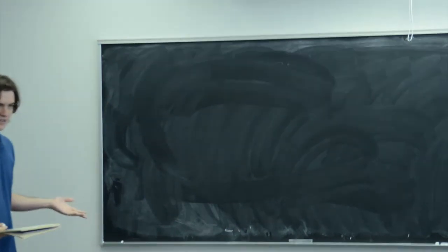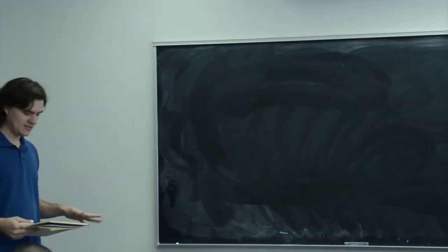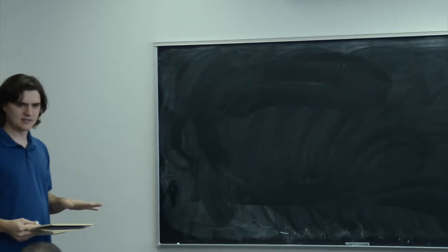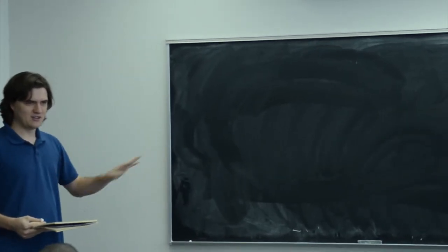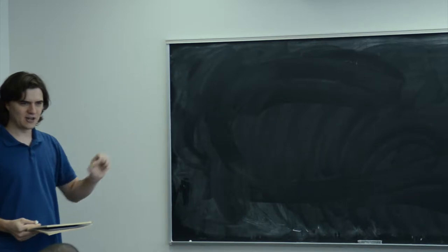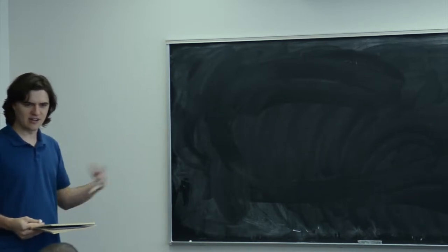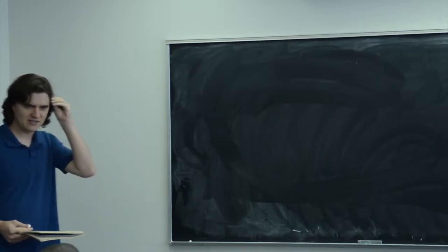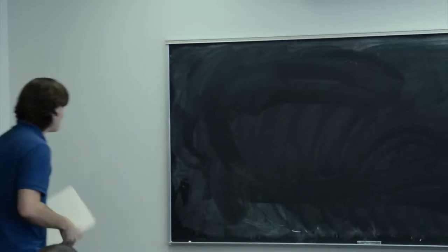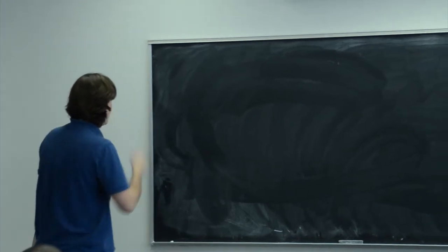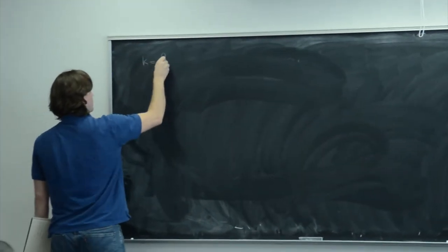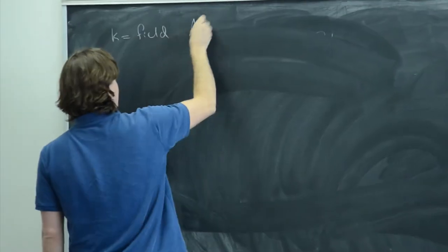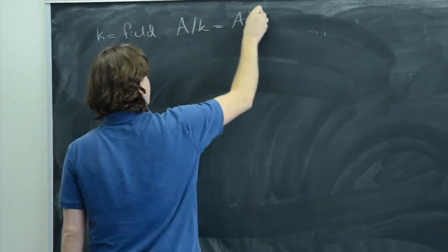The proofs are a little too involved to do completely here, because we don't have that much time. But in fact, the hardest parts tend to be statements that are true for general varieties, and the special arguments for abelian varieties are not that long on top of those general statements. Throughout today, k is going to be a field, and typically A will denote an abelian variety over k.